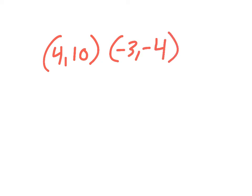Okay, last example of the distance formula. So I have (4,10) and (-3,-4), and once again I'm going to do y minus y, so negative 4 minus 10, I'll square it.